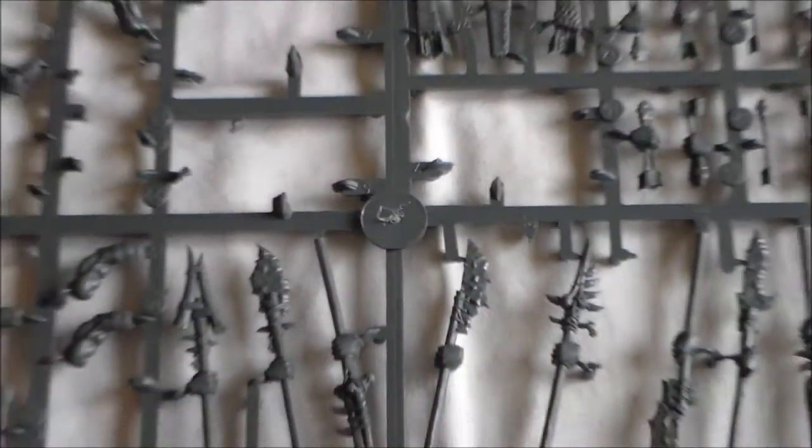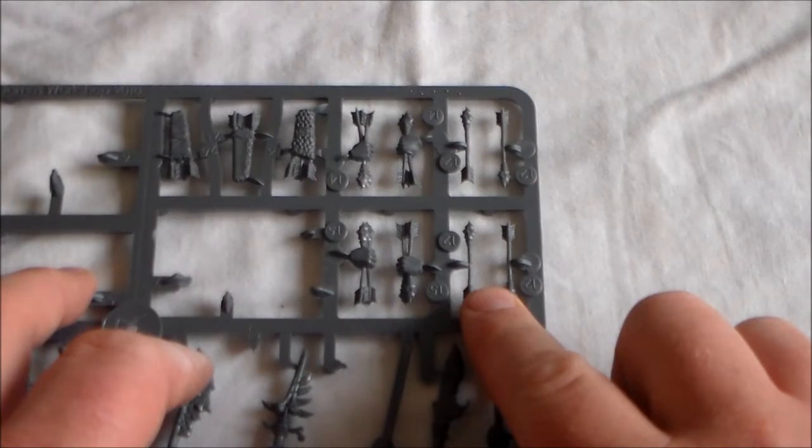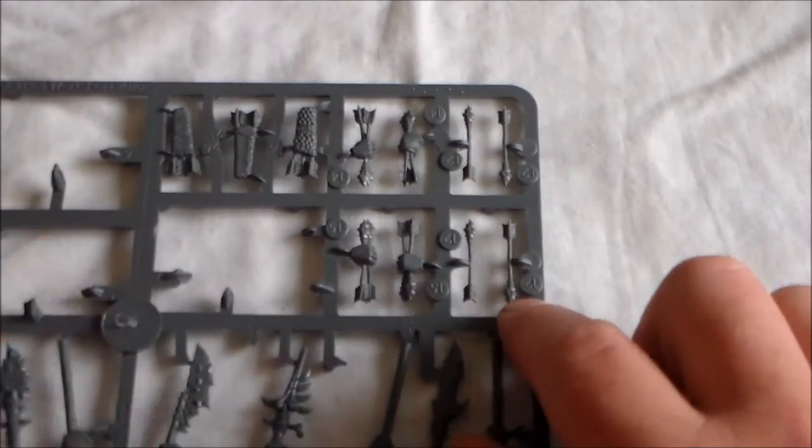And the third sprue, which is the coolest I think, you get a lot of cool bits on it. So you get your arrows, by themselves they're cool. They're always nice to have. You can stick them in the guys, stick them on bases.